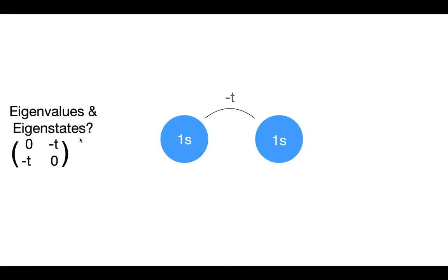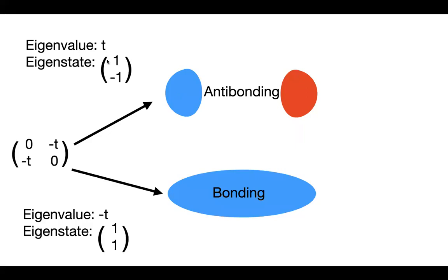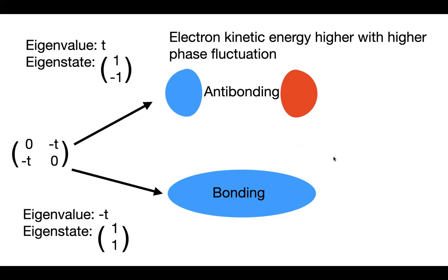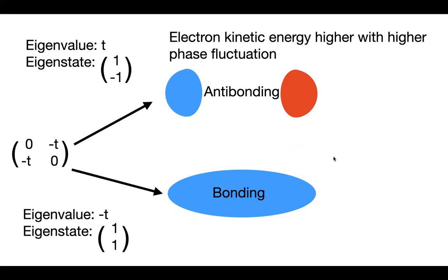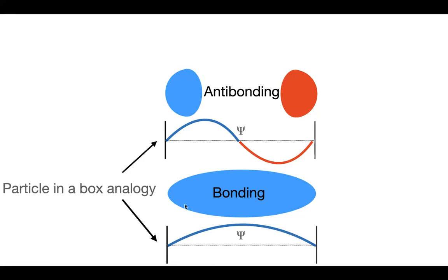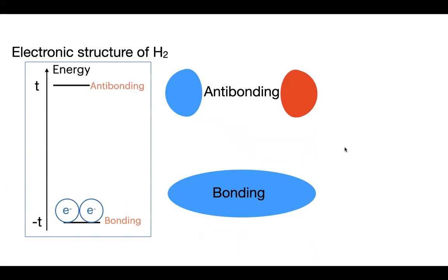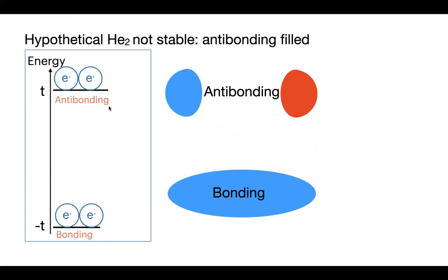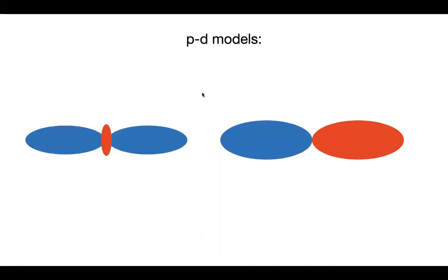The bonding state is filled — electron kinetic energy is higher with more phase fluctuation, like a particle-in-a-box analogy. Bonding orbitals stabilize materials; anti-bonding orbitals destabilize them — which is why He₂ is not stable, since the anti-bonding orbital would be filled. Many of these materials have a d orbital and a p orbital with hopping t between them in a unit cell, giving a Hamiltonian with d-state energy higher than p-state energy.